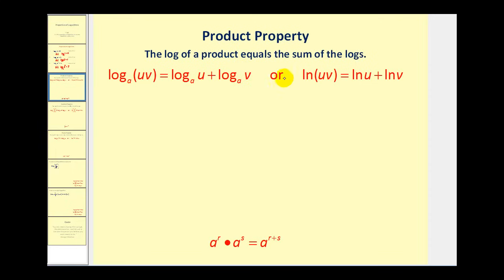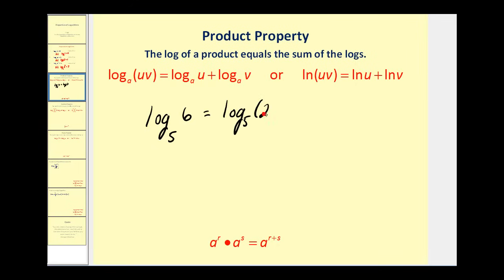We can also state the same rule using natural logs. Since logarithms are exponents, there's a connection between the product property for exponents and for logarithms. When multiplying with the same base, you add exponents — and similarly, when multiplying numbers inside a log, you add your logarithms. For example, log base five of six can be rewritten as log base five of two plus log base five of three.